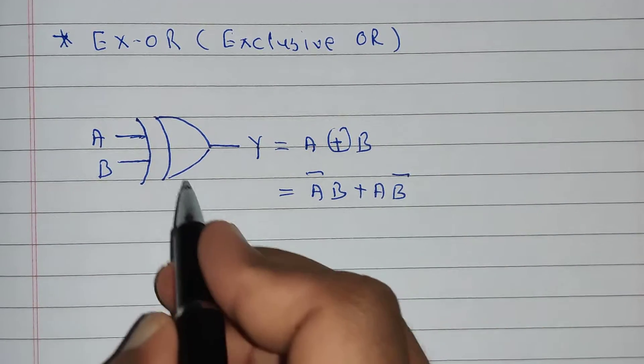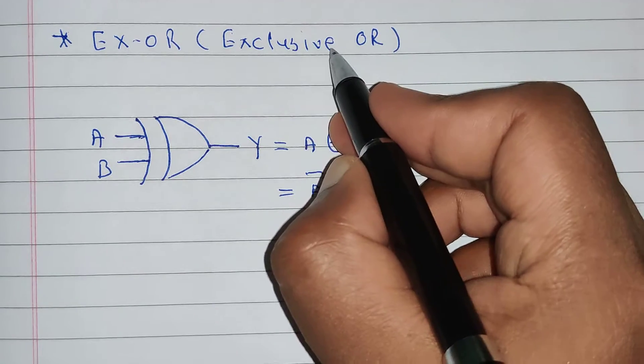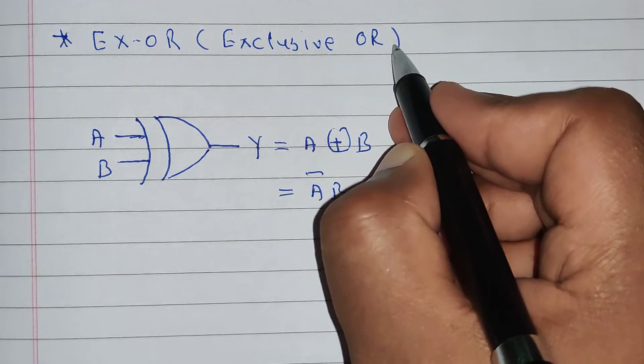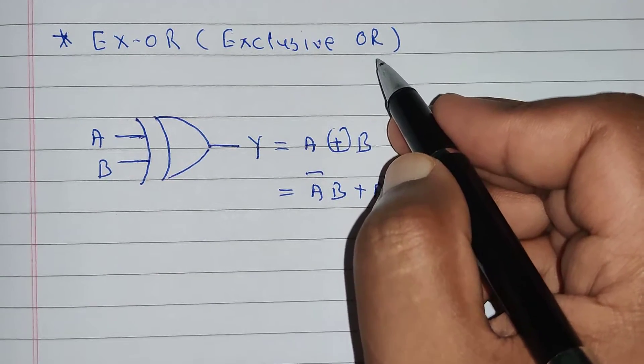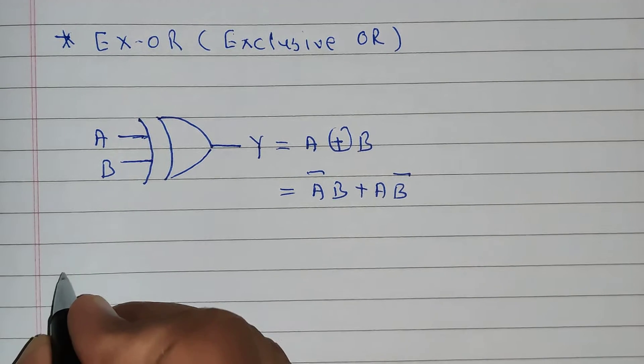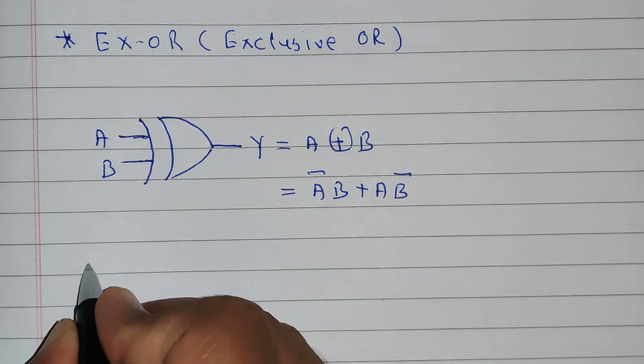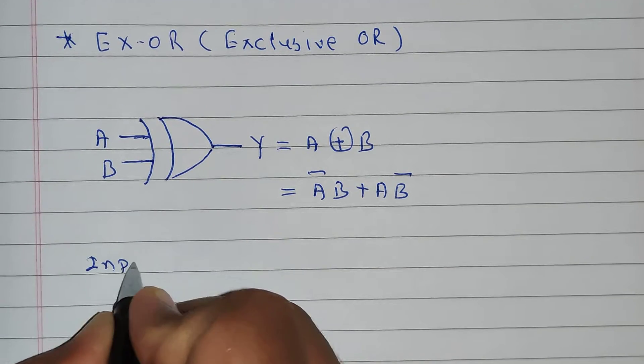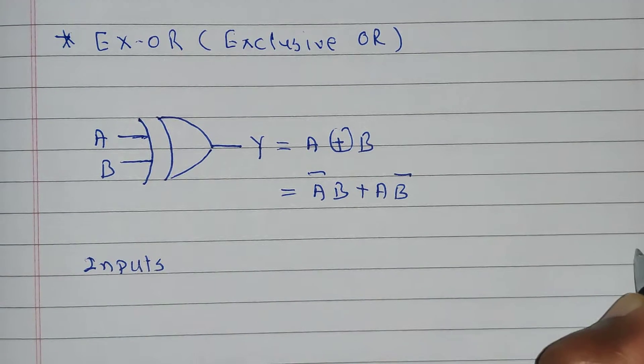So, this is the operation performed by exclusive OR gate. When inputs are exclusive, at that time only, output will get generated. Now, let's read the truth table of this. So, for the truth table, we will require inputs and output.